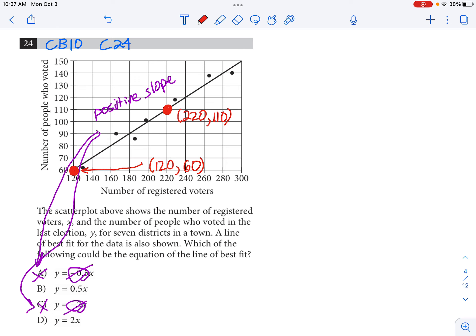And 220 comma 110 is exactly right, and I'm going to compute my slope as y2 minus y1 over x2 minus x1, and that's going to come out to 110 minus 60 over 220 minus 120, and that comes out to 50 over 100 which is equal to 1 half.